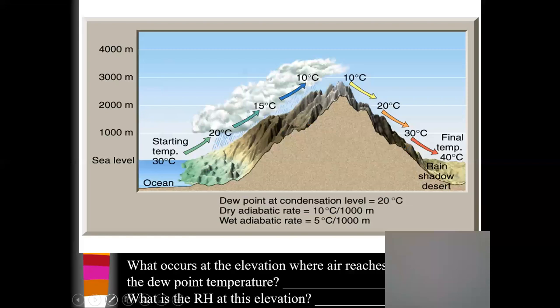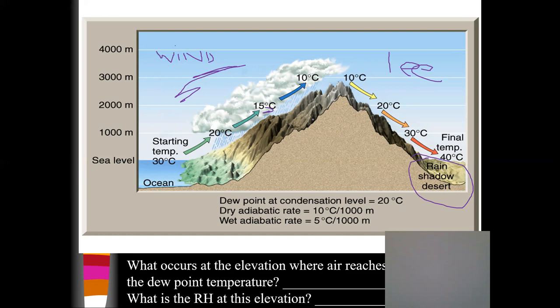As long as the air inside the cloud remains warmer than the air outside the cloud, the cloud will continue to rise. For purposes of this diagram, we assume all the moisture came out on the windward side of the mountain. This is the lee side of the mountain — the protected side, or the side we say is in rain shadow. As the air descends it warms up, and we need cooling temperatures for condensation to take place.